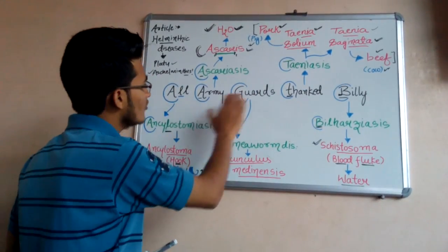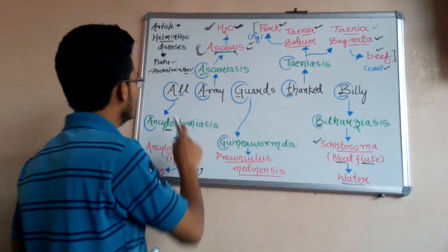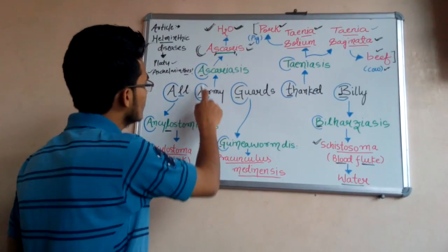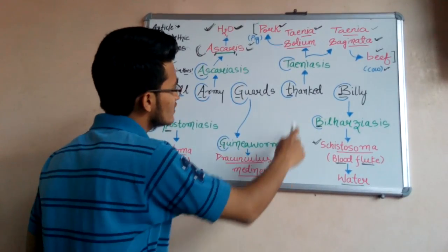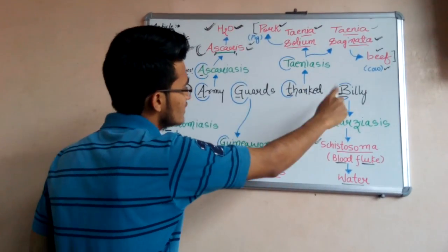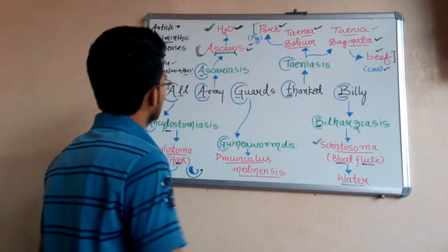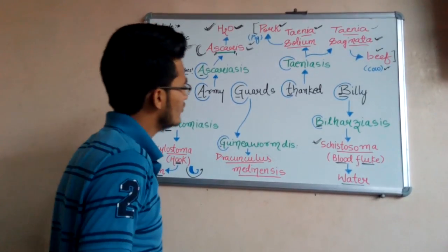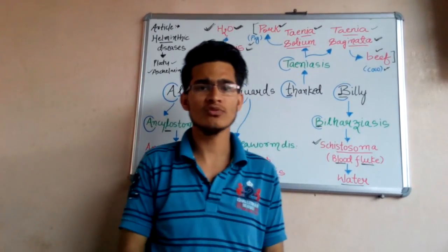So the full trick is: All Army Guards Thank Billy — which simply means Ancylostomiasis, Ascariasis, Guinea worm disease, Taeniasis, and Bilharziasis. I think this trick is going to help you a lot in your examination.